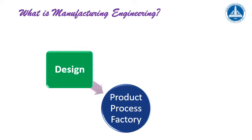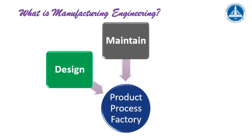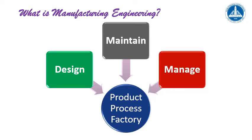We maintain the products, we maintain the process, the machinery doing this process, and of course we maintain the whole factory. We also manage the product design phase, the processes, and the whole factory — factory managers are manufacturing engineers. So these are the three main components of what manufacturing engineers do in their life: they design, they maintain, and they manage.